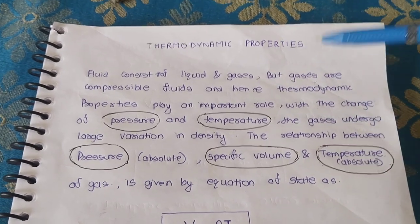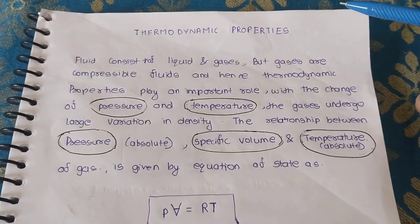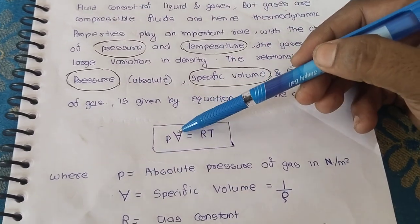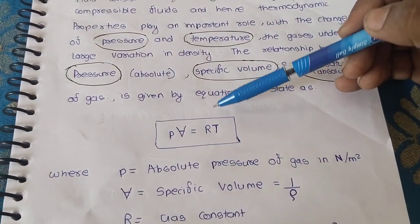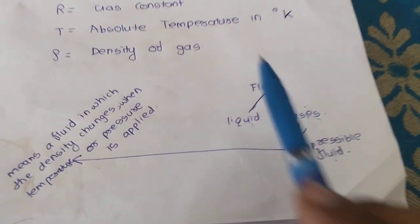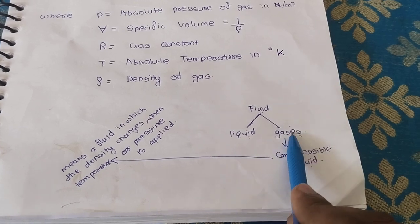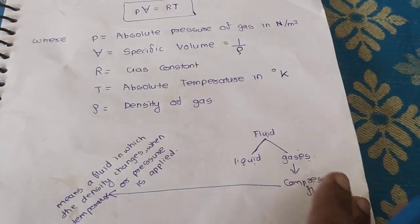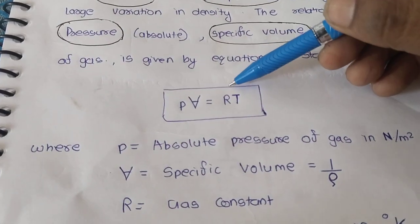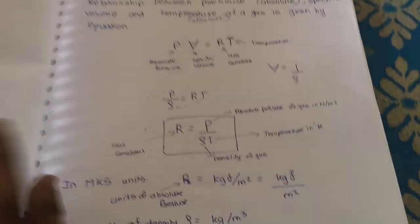In the previous session we studied about the thermodynamic properties and the relationship between absolute pressure, specific volume, gas constant, and temperature. We studied that fluid consists of two components: liquid and gases, and gases are compressible fluid. Today we will study about R, which is the gas constant, and its dimensions.